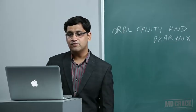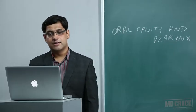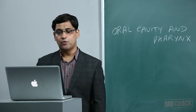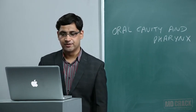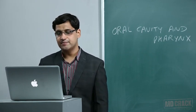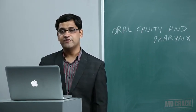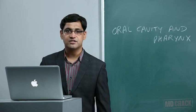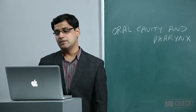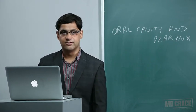The second subsite of the hypopharynx is the post-cricoid region. It is an important MCQ — it is a site for carcinoma in females, as we saw in Plummer-Vinson syndrome.